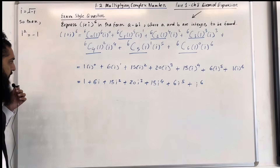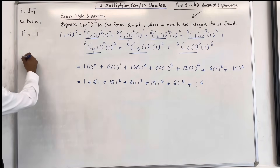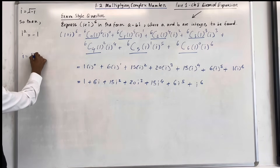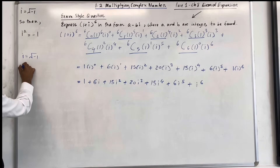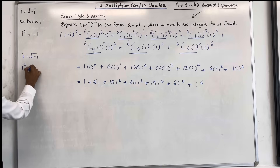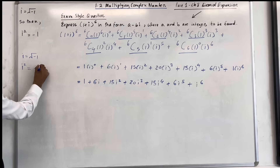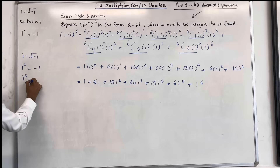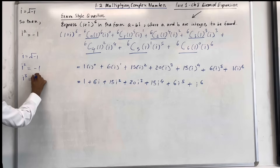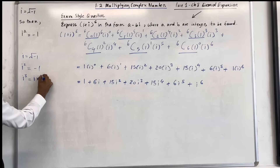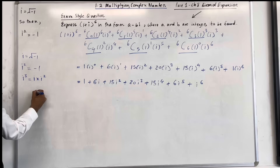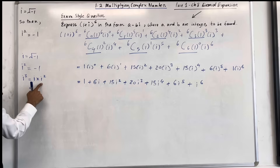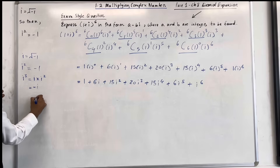So we know that i equals square root of minus 1, and i squared equals minus 1. Now i cubed equals i multiplied by i squared. We know that i squared is negative 1, so negative 1 multiplied by i is negative i.